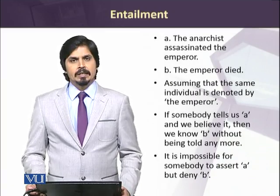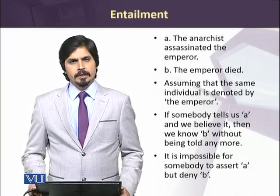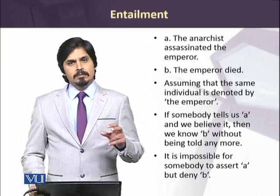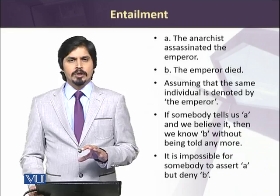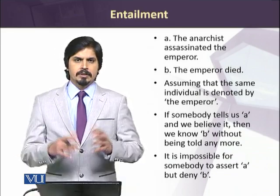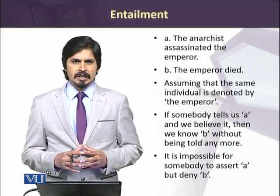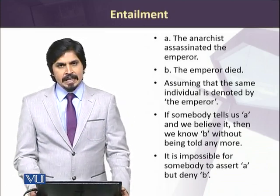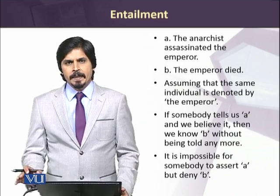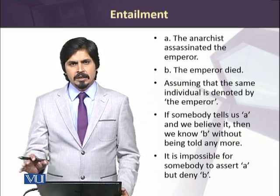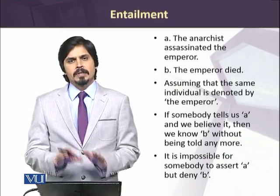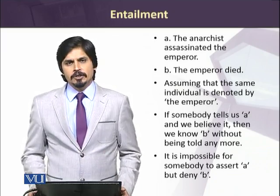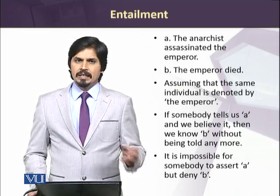Let's take an example. The first sentence is 'The anarchist assassinated the emperor' and the second sentence is 'The emperor died.' Assuming the emperor mentioned in both sentences is the same person, if we believe sentence A then we have to believe sentence B. If we believe an anarchist has killed the emperor, we cannot deny that the emperor has died. So if A is true then B has to be true — they are in a relationship of entailment. It is impossible to assert A and deny B.